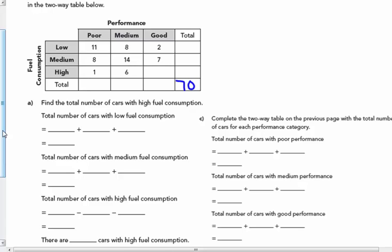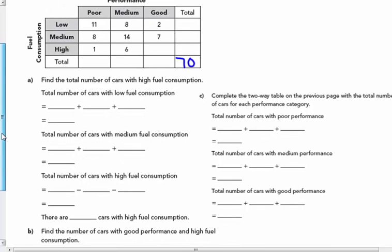Find the total number of cars with high fuel consumption. If I read across that row, 1, 6, and I don't know, I'm not going to be able to get a total there. However, I can figure it out by doing a few steps ahead of time. First, find the total number of cars with low fuel consumption. I can add together the 11, the 8, and the 2, which adds to 21.